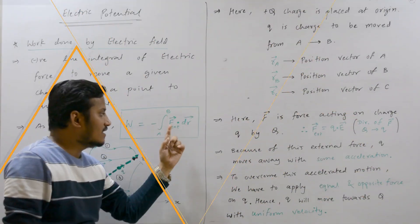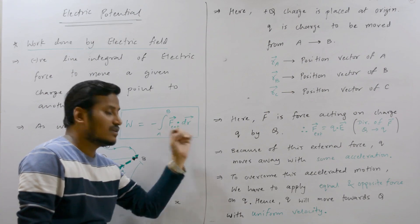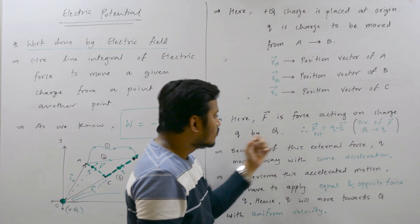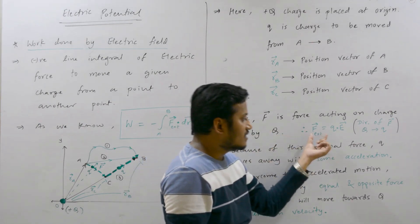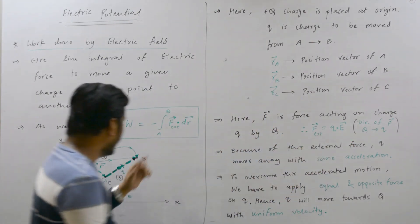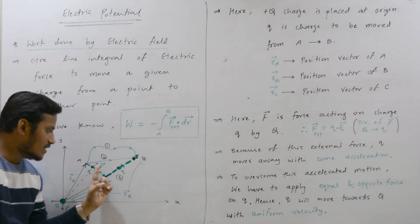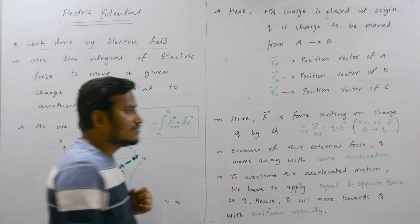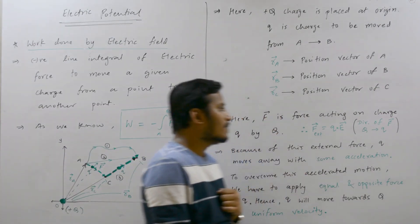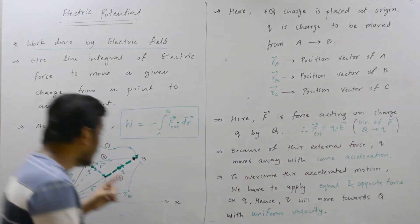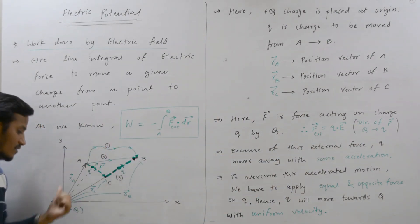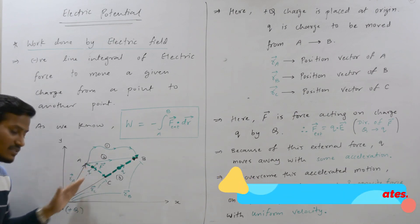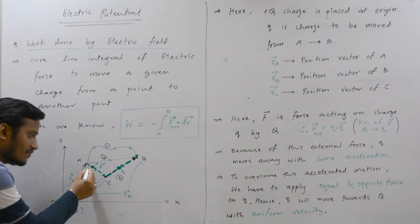In this equation, F external is used. This F is the force acting on charge small q due to charge capital Q. F external equals small q into the electric field at that place. This equation was from chapter number 1, and the direction of this force is from charge capital Q toward charge small q, meaning this direction is along the position vector of this charge.